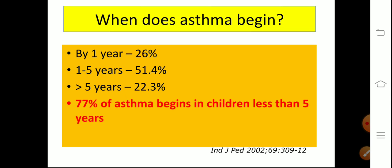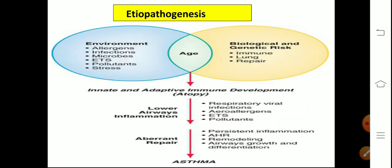When asthma begins, it begins by one year of age in 26% of patients, between one year to five years in 51% of cases, and after five years in 22% of cases. Cumulatively, 77% of asthma begins in children less than five years of age, so you should remember that asthma often begins in early childhood.